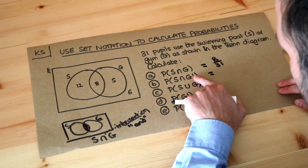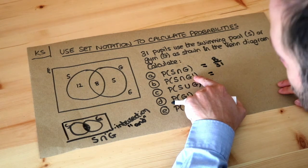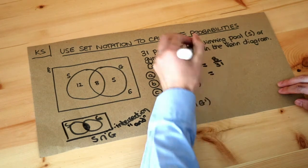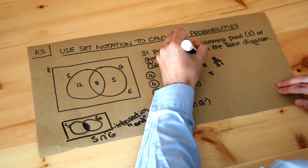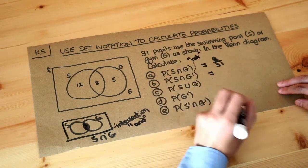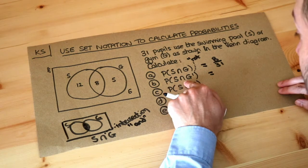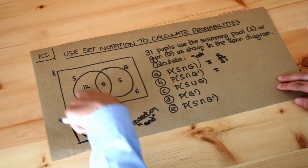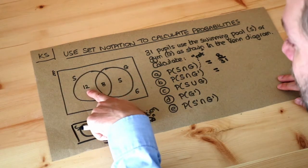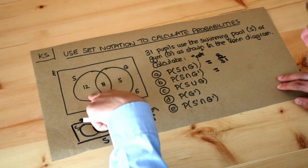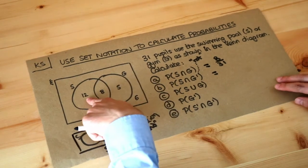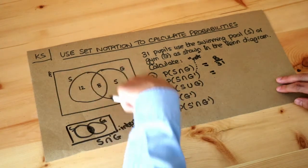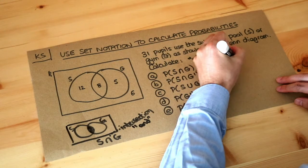We also saw that this symbol here, this dash or formally known as prime—so it's S intersection G prime—means not. We want the things that are in S and are not in G. What's the region that's in S but not allowed to be in G? Well, that limits us to just this region here because this region is in S but not in the G circle. The probability of being in that region is those 12 things out of the total of 31 students, so it's 12/31.